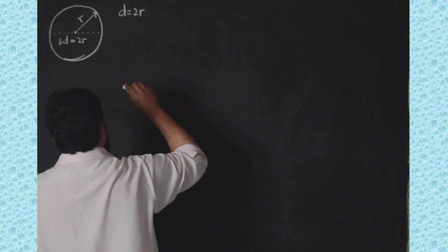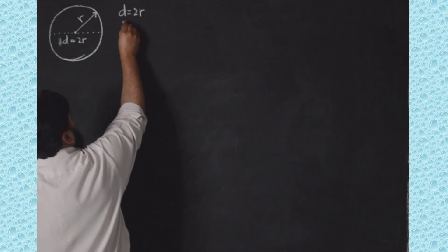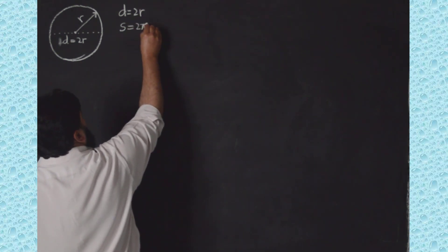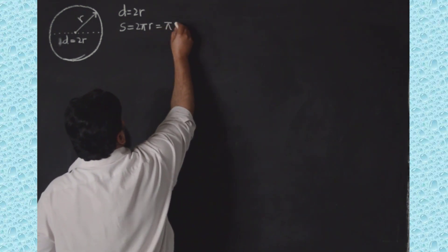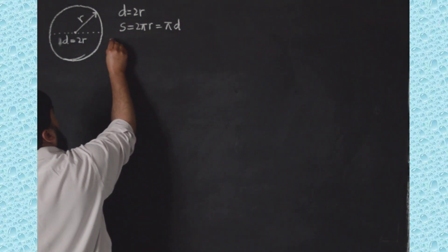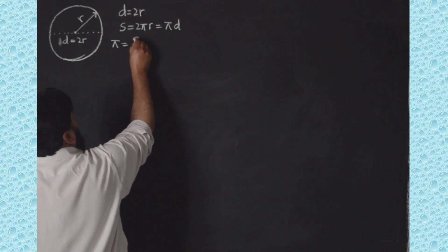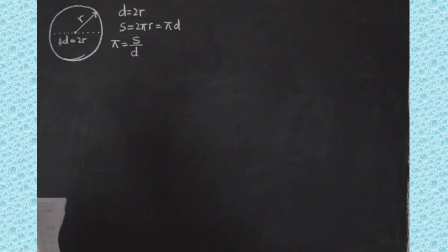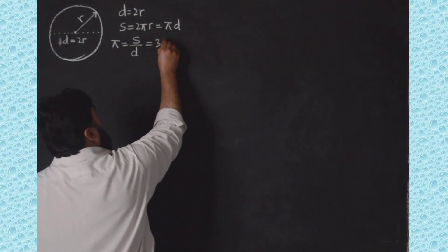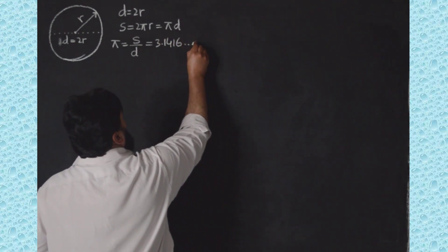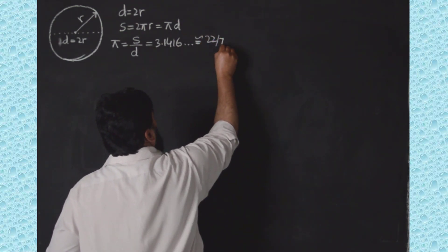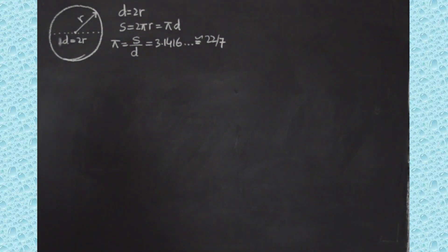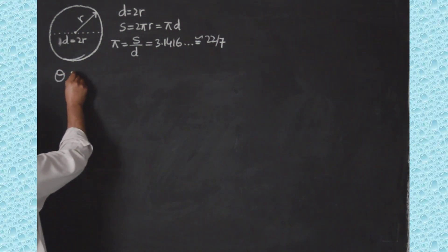I calculated that s is equal to 2πr, which I call the circumference. So I can write that the circumference is π times 2r, and 2r is the diameter d. So π is equal to the ratio of the circumference to the diameter, and this is equal to 3.1416. This is an irrational number — it goes on, but it can be approximated as 22 over 7. It is basically the ratio of the circumference to the diameter.